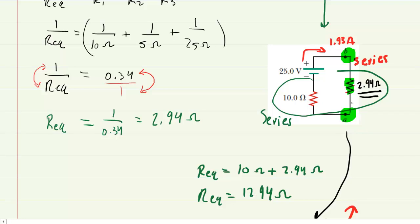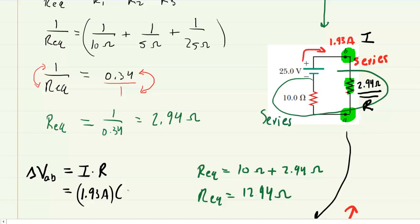We can calculate the potential difference between points A and B by applying Ohm's Law. We have the resistance value and the current, so the potential difference equals current multiplied by resistance: 1.93 amps times 2.94 ohms. When we compute this, we get approximately 5.68 volts. This is the correct answer to part A of the question.